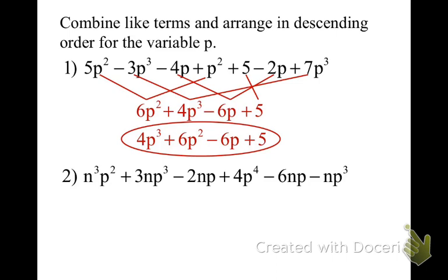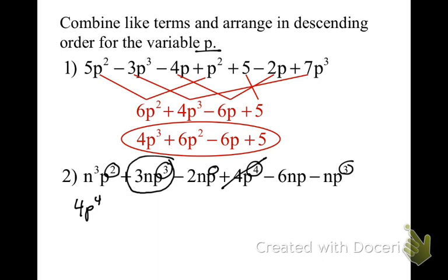When you have more than one variable, they have to tell you which variable to order by. They want it in descending order of variable p. So I'm looking: this is the 2nd term, this is the 3rd, this is the 4th, here's the 3rd, and here's the 1st. So we're going to go with 4p to the 4th power. And then I'm going to combine 3np to the 3rd minus np to the 3rd.